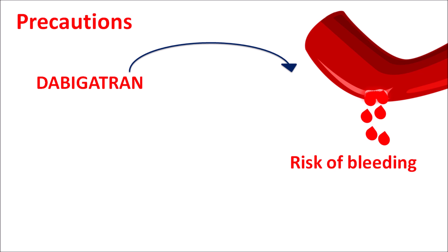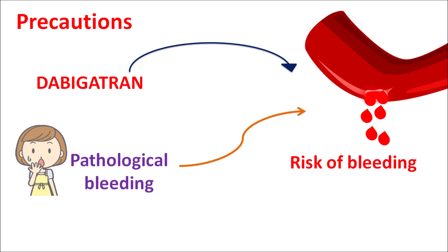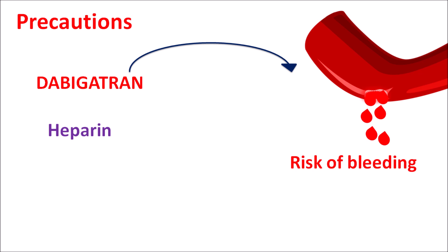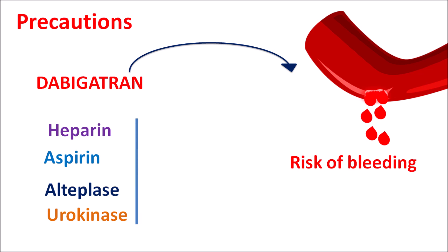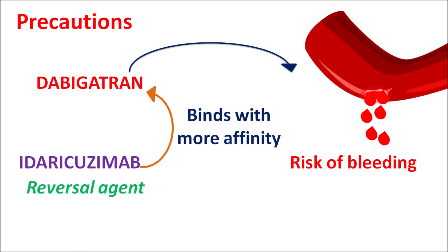Since dabigatran acts as an anticoagulant, another important precaution is increased risk of bleeding, which is more pronounced in pathological conditions. In patients with pathological bleeding, dabigatran produces very severe bleeding and should not be used. Drugs like heparin (an IV anticoagulant), aspirin (an antiplatelet agent), and fibrinolytics like alteplase and urokinase, when combined with dabigatran, can further increase bleeding risk and should be used carefully. In case of severe bleeding, the reversal agent idarucizumab forms a strong complex with dabigatran, reducing its activity and thereby reducing bleeding risk.